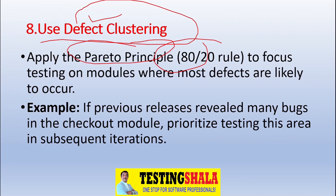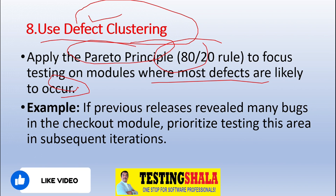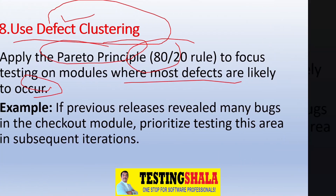The eighth method is defect clustering, applying the Pareto principle — the 80/20 rule. We focus testing on the modules where most defects are likely to occur, concentrating on roughly 20% of the modules that yield 80% of the defects. This way, within less time you can find more issues, and by fixing them you can release the product more quickly.